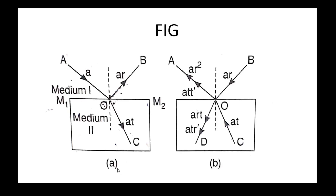Now I will take a diagram. There are two mediums — this is medium 1 and this is medium 2. M1 and M2 is the boundary between the rarer medium and the denser medium. Let wave AO be a light wave of amplitude small 'a', incident at point O on the boundary M1-M2 between medium 1 and medium 2. Medium 2 is optically denser than medium 1.